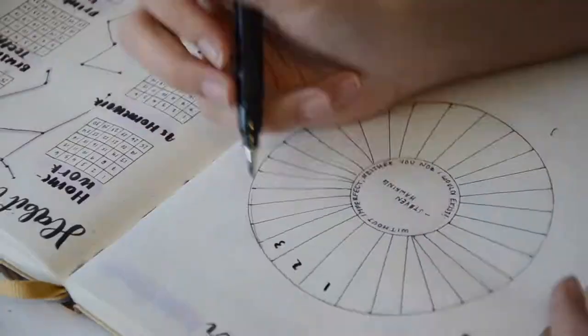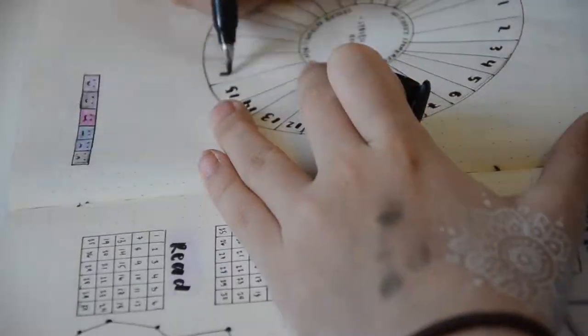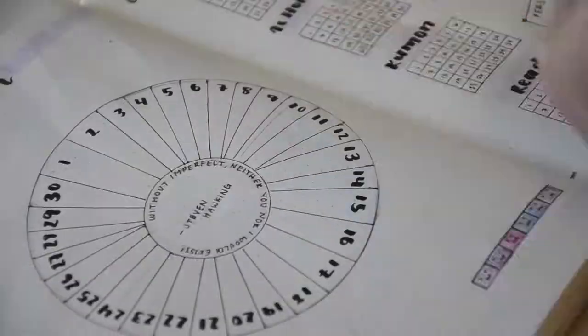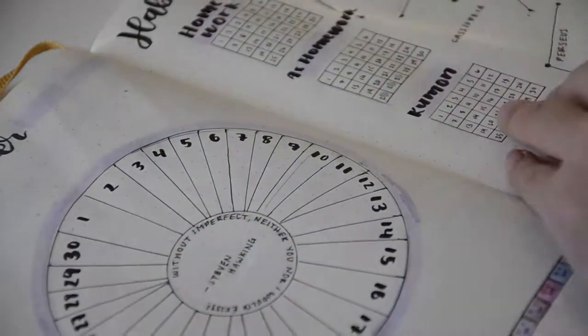Here I am just correcting a few things and adding in the dates for my mood tracker, and using my Tombow dual brush pen to add in a ring of color.